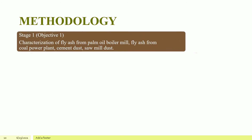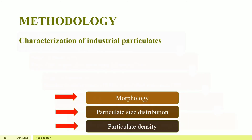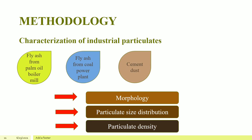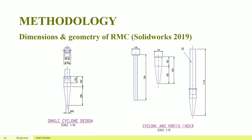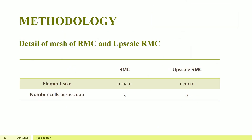The method to conduct this study is categorized into 5 stages. The characterization of industrial particulates is done by studying the morphology, particulate size distribution, and particulate density of 4 different industrial particulates. The 3-dimensional sketching of the retrofitted multi-cyclone is drawn according to the dimensions and geometry using SolidWorks. The dimensions of upscale RMC are 1.5 times the dimensions of the pilot plant RMC. The mesh details of RMC and upscale RMC are listed in the table.